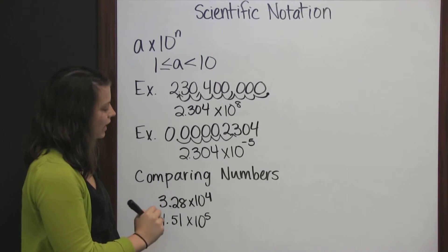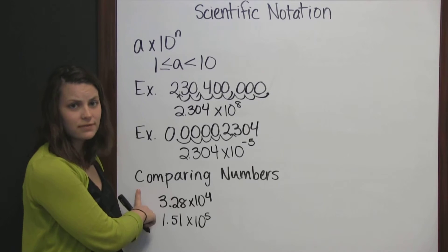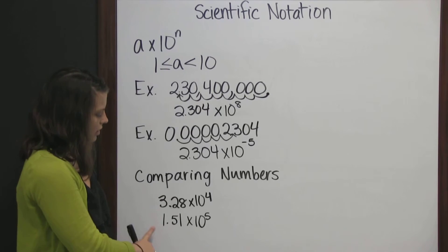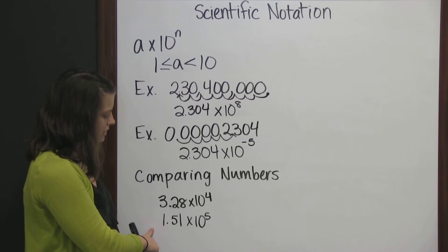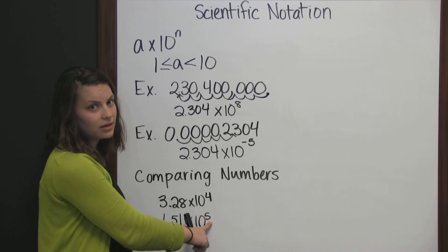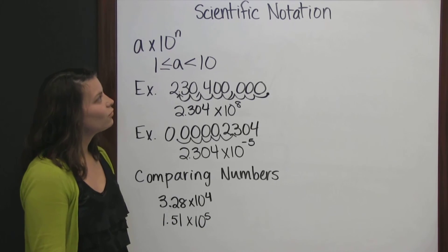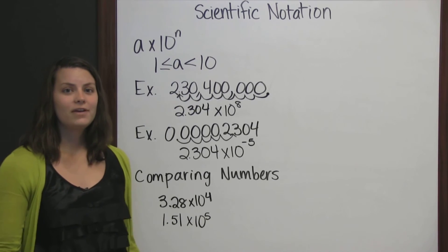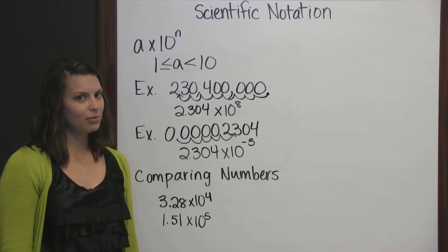We can use these exponents to compare our numbers very quickly and easily. Looking at these two numbers in scientific notation, I can tell that 1.51 times 10 to the 5th is the larger number because it has the larger exponent. So it's a great method for very large and very small numbers.